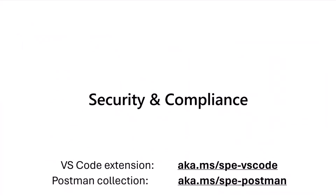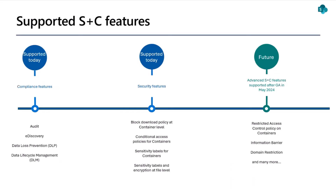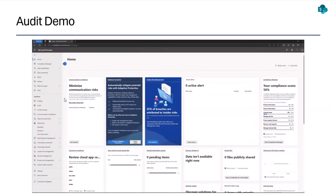Thank you, Akanksha. We are now switching gears to talk about security and compliance features supported today for content that resides in SharePoint Embedded containers. We are trying to achieve parity between what already exists in SharePoint Online and content stored in SharePoint Embedded. We support most of the compliance and security features you are already familiar with — audit, e-discovery, DLP, DLM, sensitivity labels at the file and container level, block download policies, and conditional access policies at the container level. We are also working on enabling RAC, information barriers, domain restrictions, and more — supported within the next couple of months.